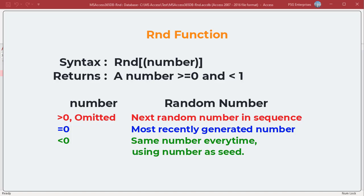For any given initial seed, the same number sequence is generated because each successive call to the RND function uses the previous number as a seed for the next number in the sequence.